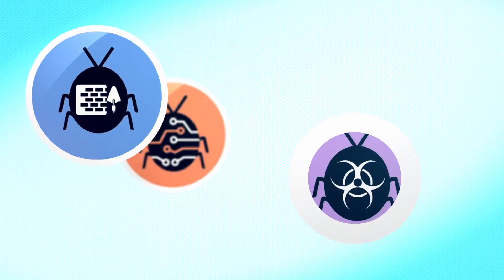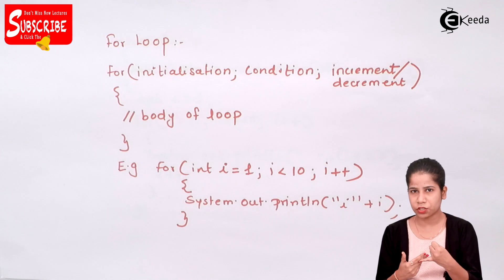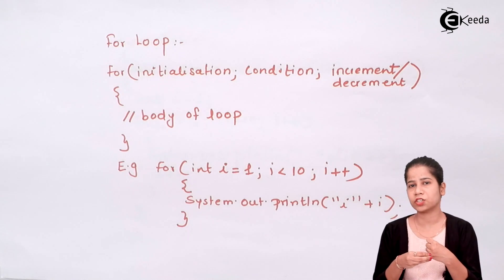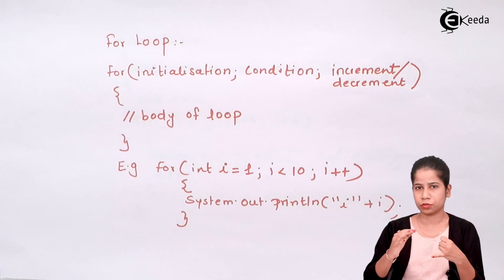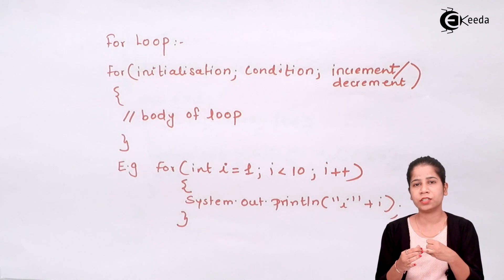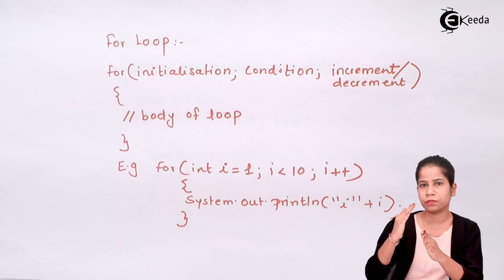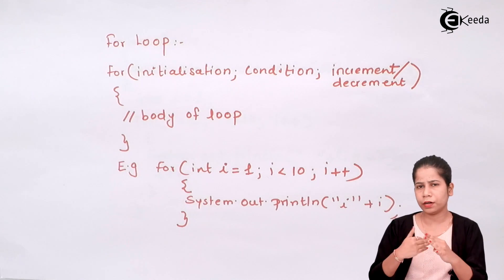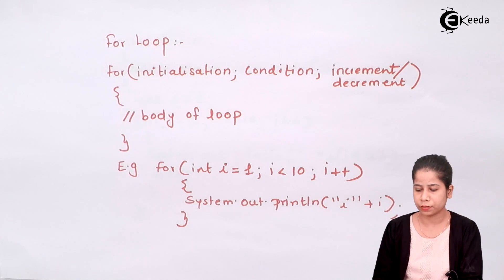Like any looping construct, the for loop consists of three parts: initialization, condition, and increment/decrement of the counter. Initialization determines the starting value of the counter. The condition determines where the counting should end — for example, if a task needs to execute five times, the condition ensures the counter runs five times. Increment or decrement updates the counter based on the program.